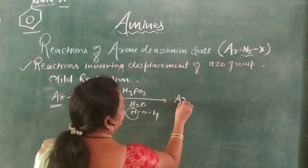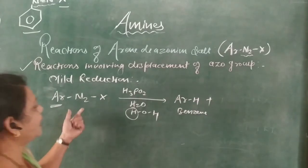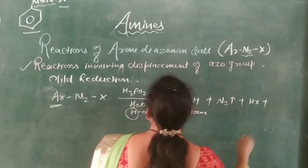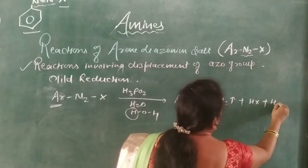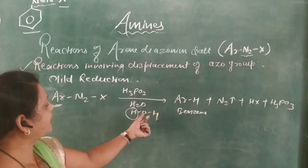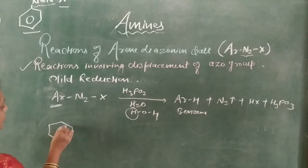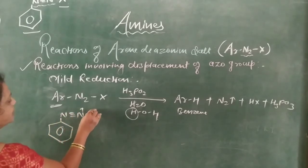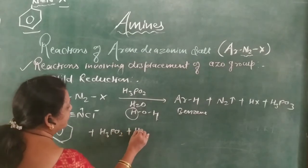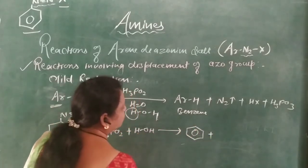In the mild reduction with H3PO2, Ar combines with H from water to form ArH — the corresponding arene or benzene — plus evolution of N2, plus HX, and the oxygen combines to form H3PO3. For example, benzene diazonium chloride reacts with H3PO2 plus water: the phenyl group combines with H to form benzene, plus N2, plus HCl, plus H3PO3.